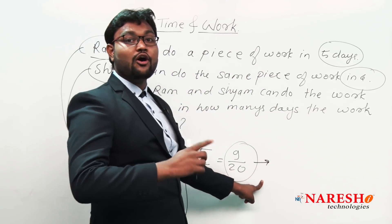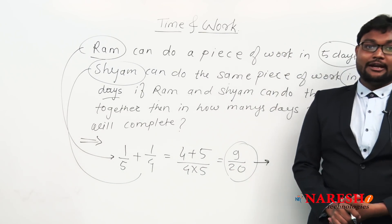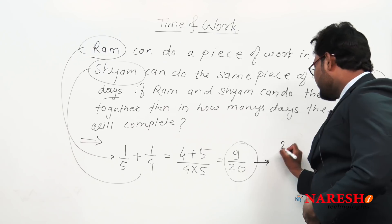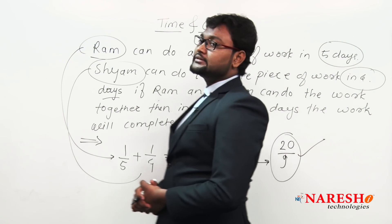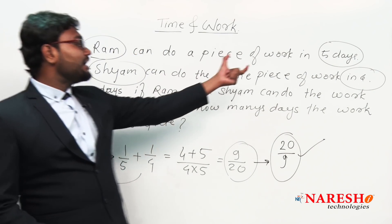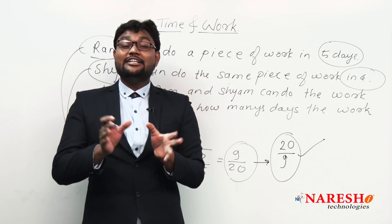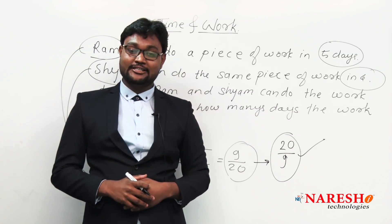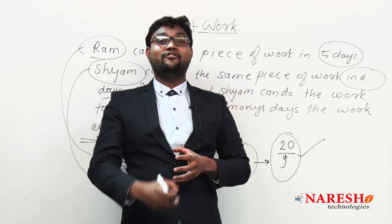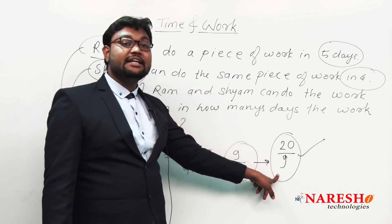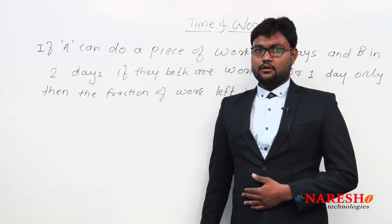This nine by twenty is their combined one-day work when working together. To find the number of days required, we take the reciprocal: twenty by nine. That is your answer. Note: we do not simply add five plus four, because they are working together, not separately.